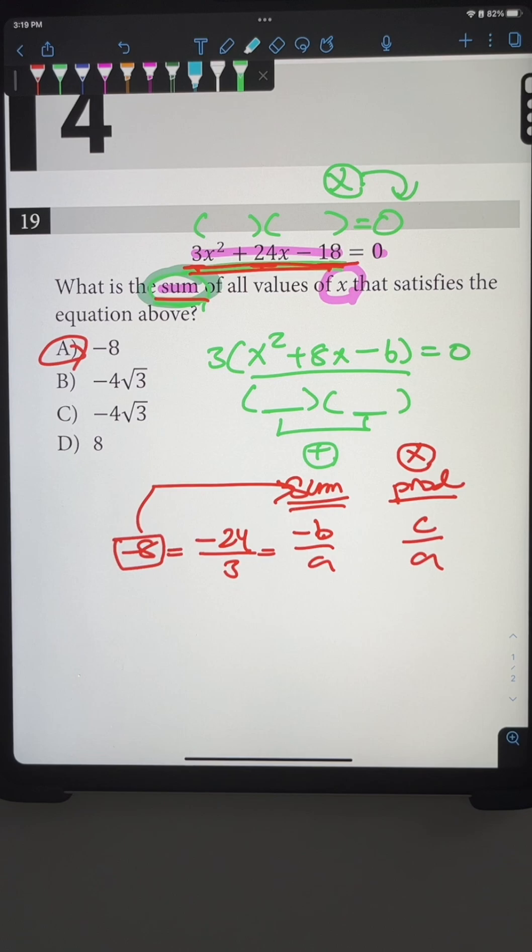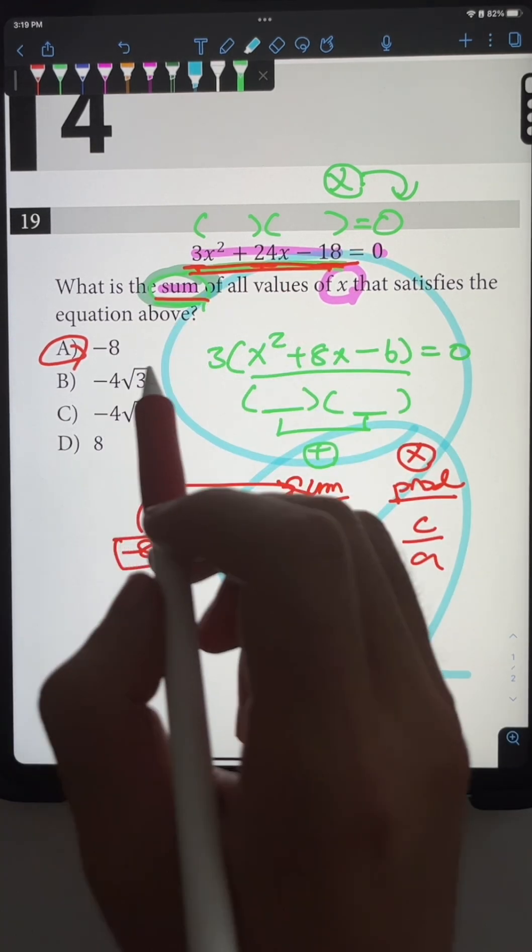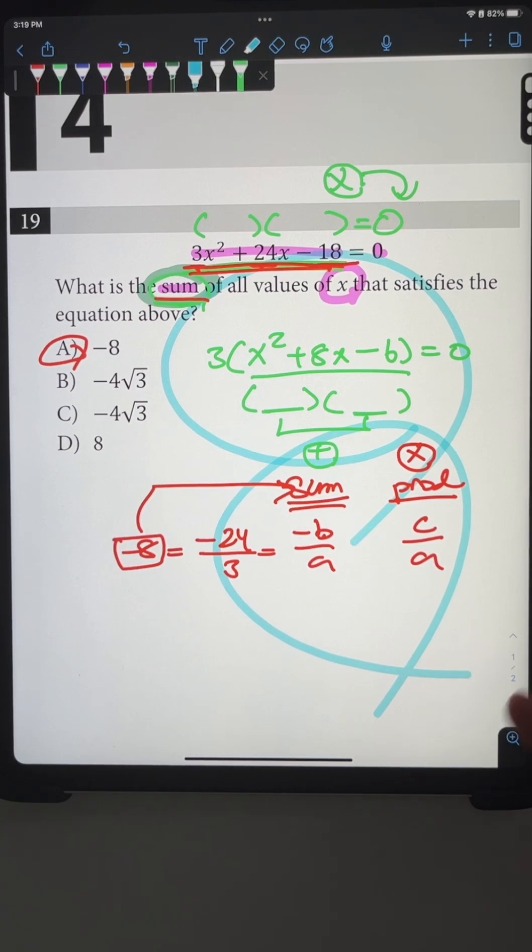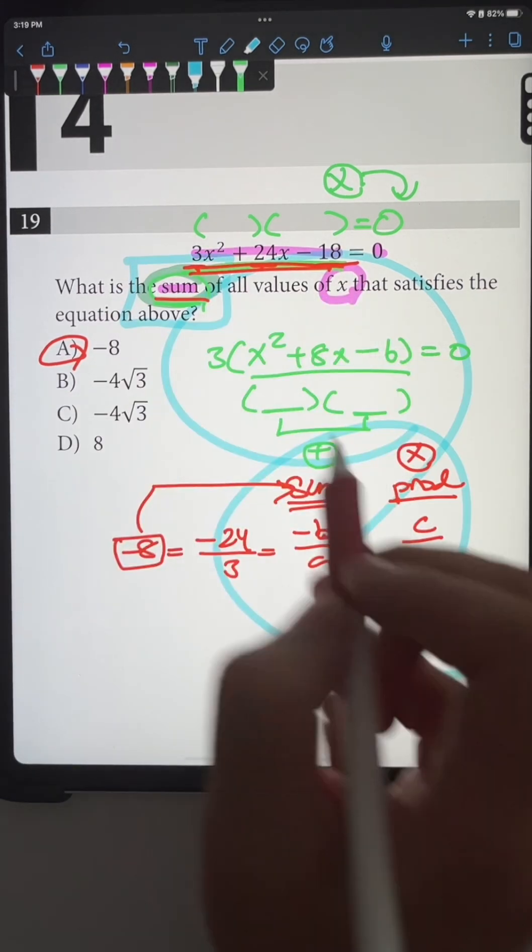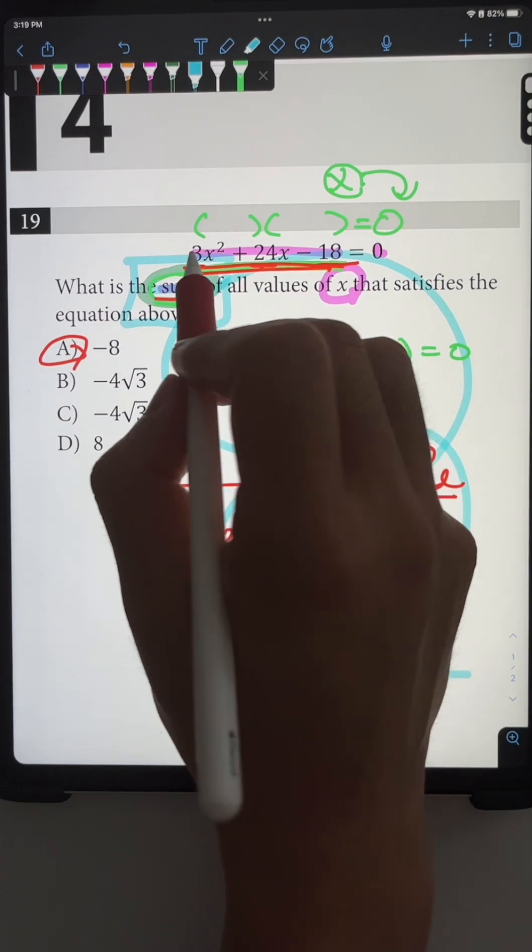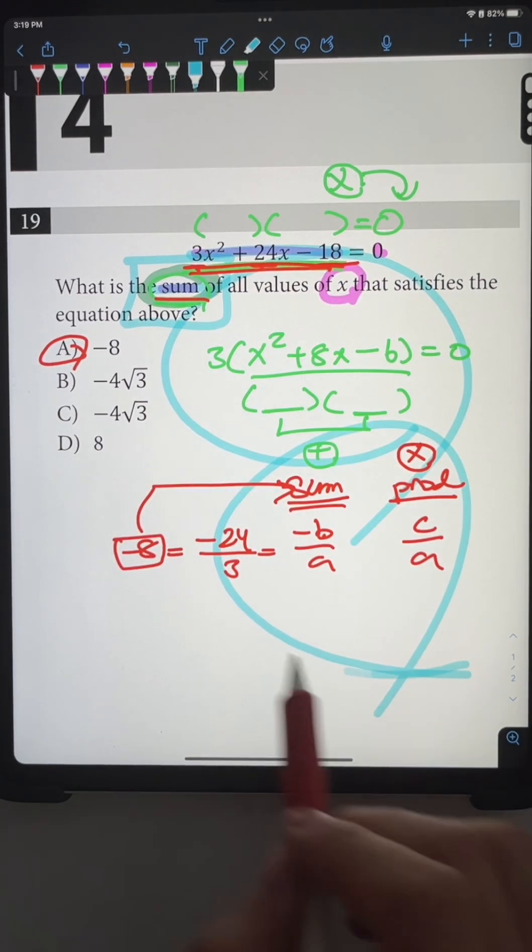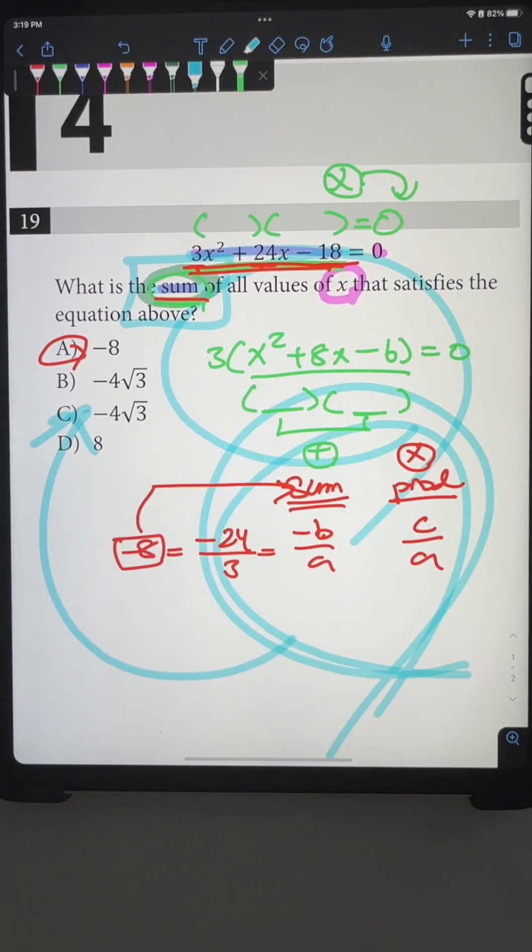That's why these questions are either you know it or you don't. If you don't know these formulas, no matter how hard you try, it's going to take you 2-3 minutes. However, if you know the keywords to look for, like sum and product, and recognize that these won't be factorable, just go straight to the formula and you can get the answer very quickly.